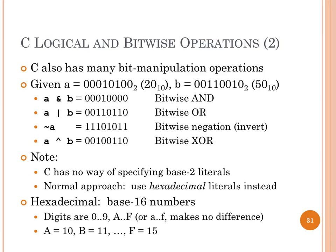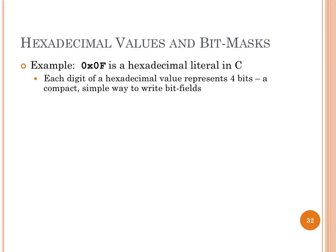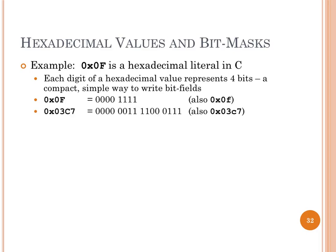Translating hex to binary: 0x03C7 breaks down as 0=0000, 3=0011, C=1100, 7=0111 — you just convert each digit to 4 bits. You can use bitwise AND to clear bits — for example, `A & 0x0F` clears the high nibble and retains the low nibble. Bitwise OR sets particular bits — `A | 0x28` sets bits 3 and 5 while leaving others unchanged (0x28 has bits at index 3 and 5 set; the least significant bit is always on the right at index 0).